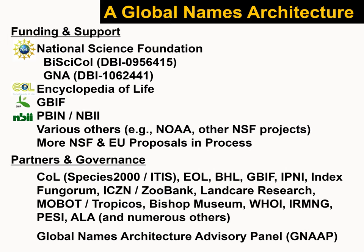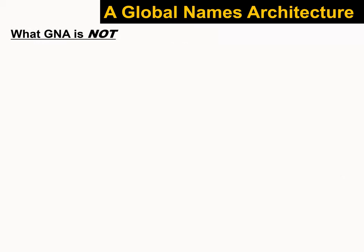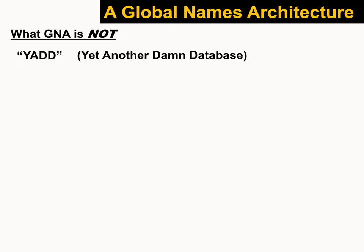These are the partners — they've all been involved in development over time. There's the Global Names Architecture Advisory Panel, which is the governing body currently led by Paul Kirk, the fungal guy. Now, let me start with what GNA is not. When I'm not being a database nerd or a fish nerd, I design deep-diving equipment, and I work with an electronics engineer who uses the term YAD — 'yet another damn diver' — for people who keep telling him how the system should work. I've co-opted that term: GNA is not yet another damn database. It's part of the acronym soup, but it's not intended to be just yet another damn database.